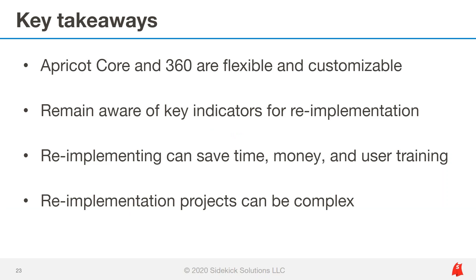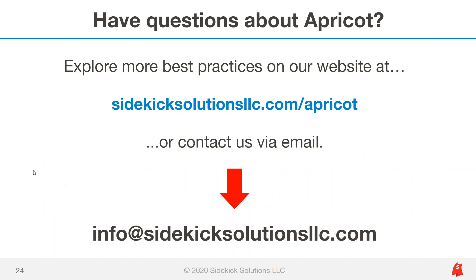Apricot Core and 360 are flexible and customizable. A well-designed system should align with your organization's workflow, program models, and reporting requirements. Navigation and reporting pain points may be indicators of a need for a system redesign. Re-implementing within your current system may save on time, money, and end user training. Re-implementation projects can be complex and have unique considerations, but standardized methodology and expert guidance are available — start with an assessment. To learn more about Apricot, you can explore our YouTube channel or visit our website. If you'd like to work with us, send an email to info@sidekicksolutionsllc.com. We would love to learn more about your organization and your Apricot to see if working together might be a good fit. Our door is always open. Thank you.